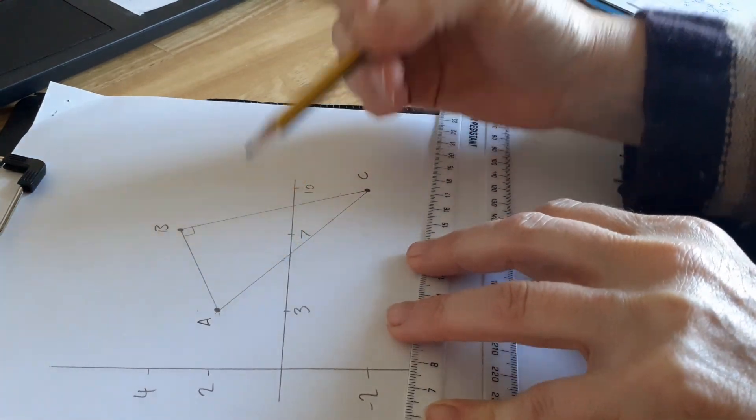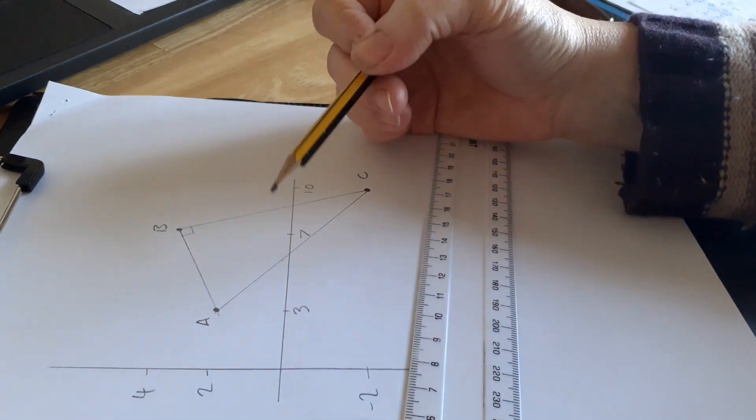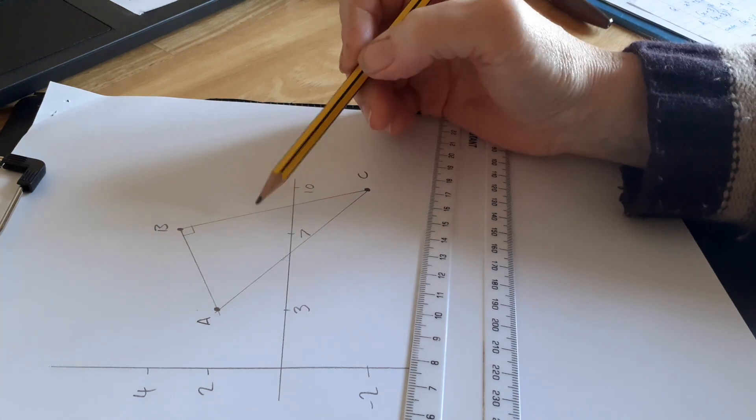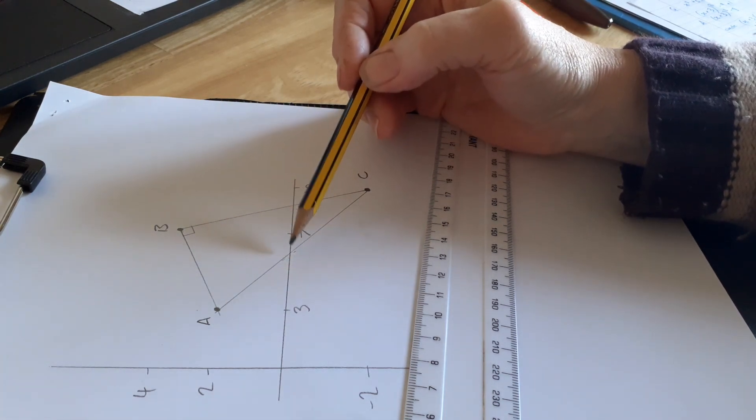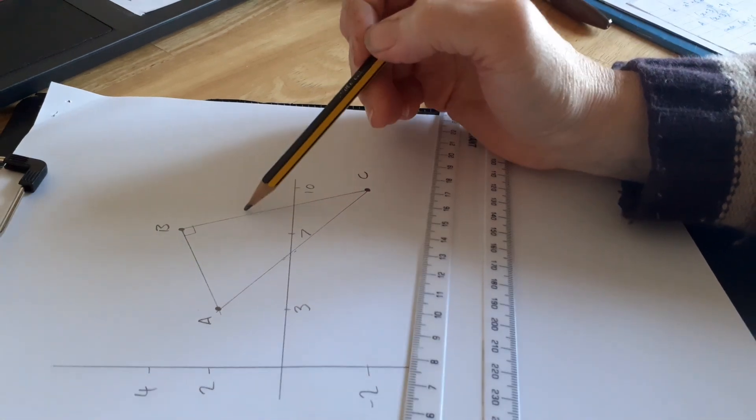They've said this is the hypotenuse and this is what you've got to work out. So if you knew that length and that length, you could use Pythagoras to work out this length. How are we going to get these lengths?